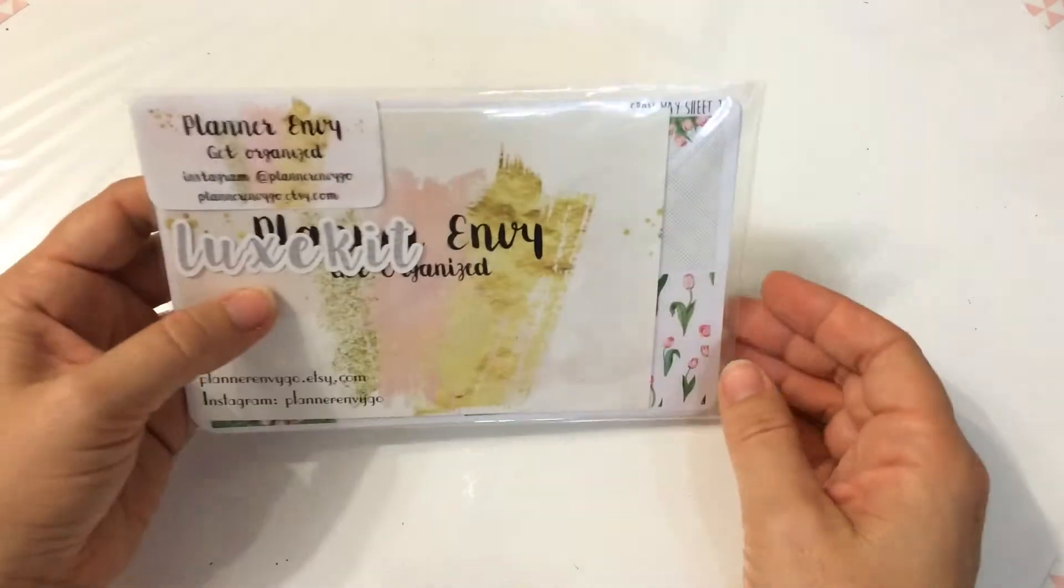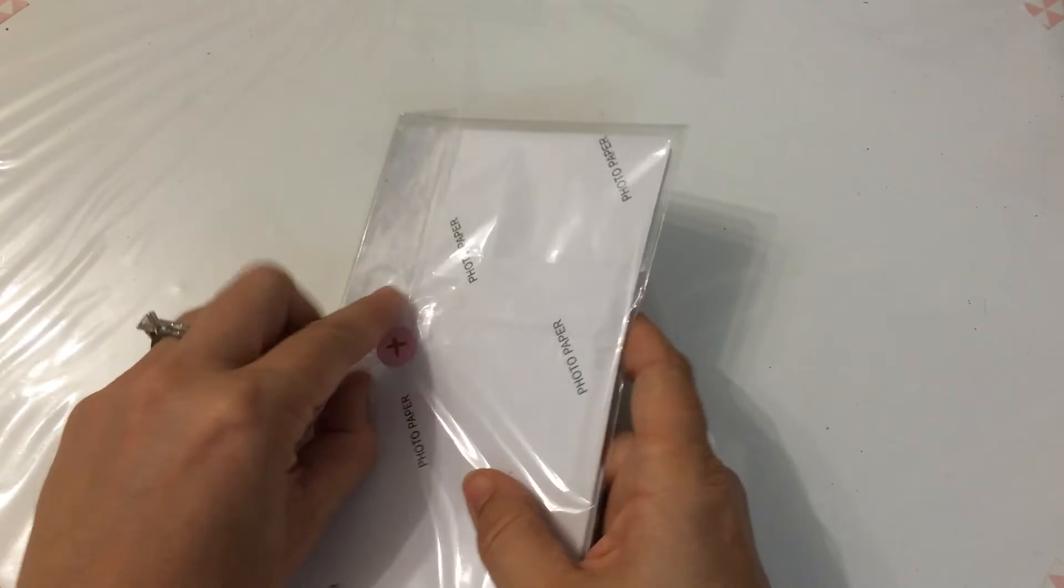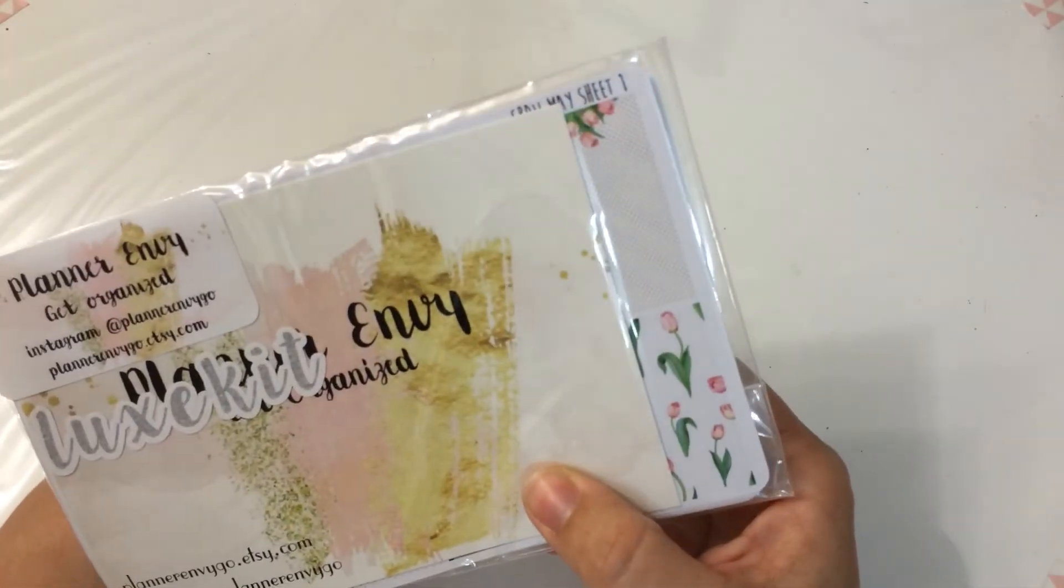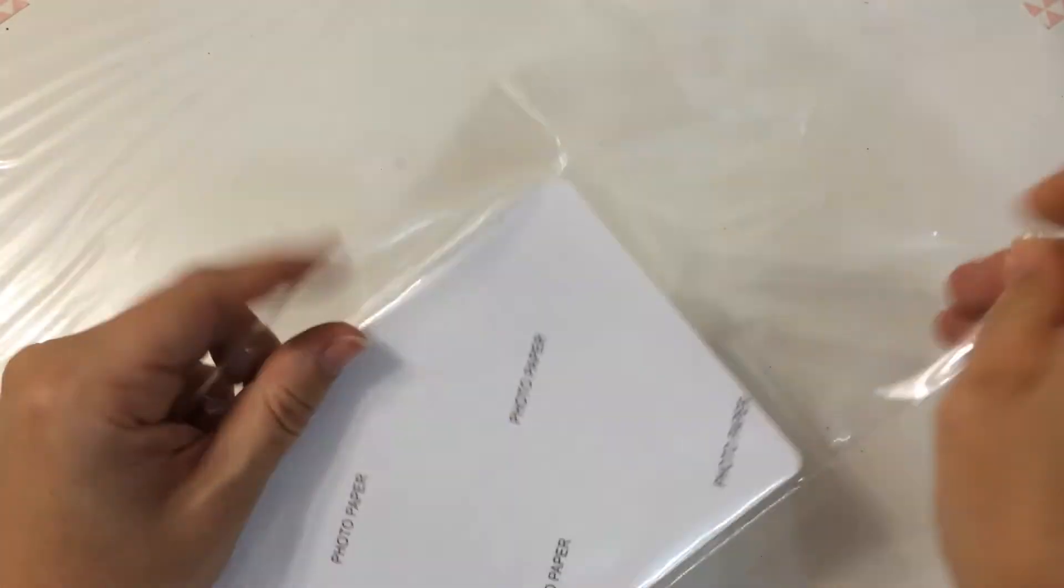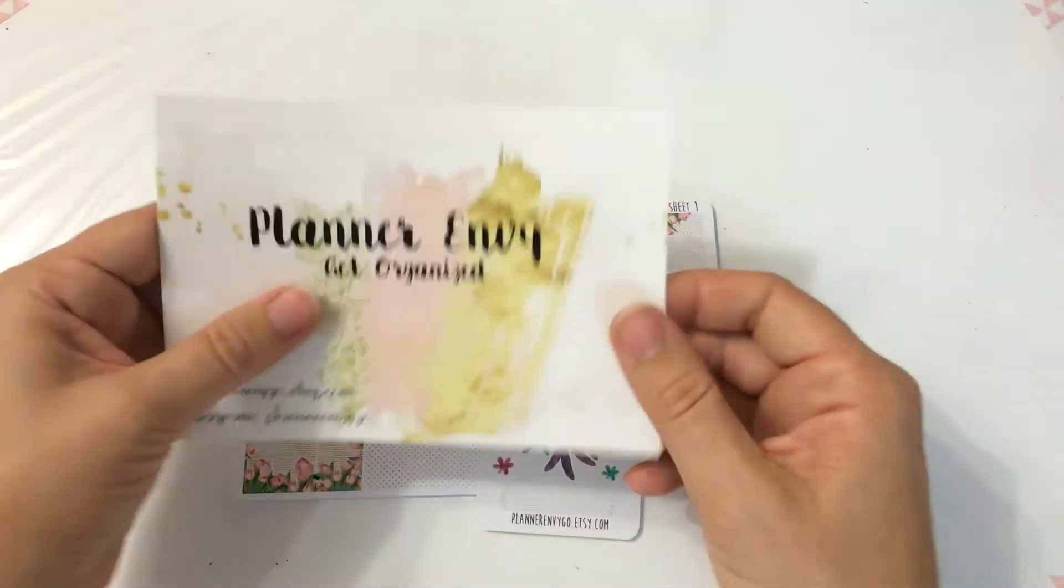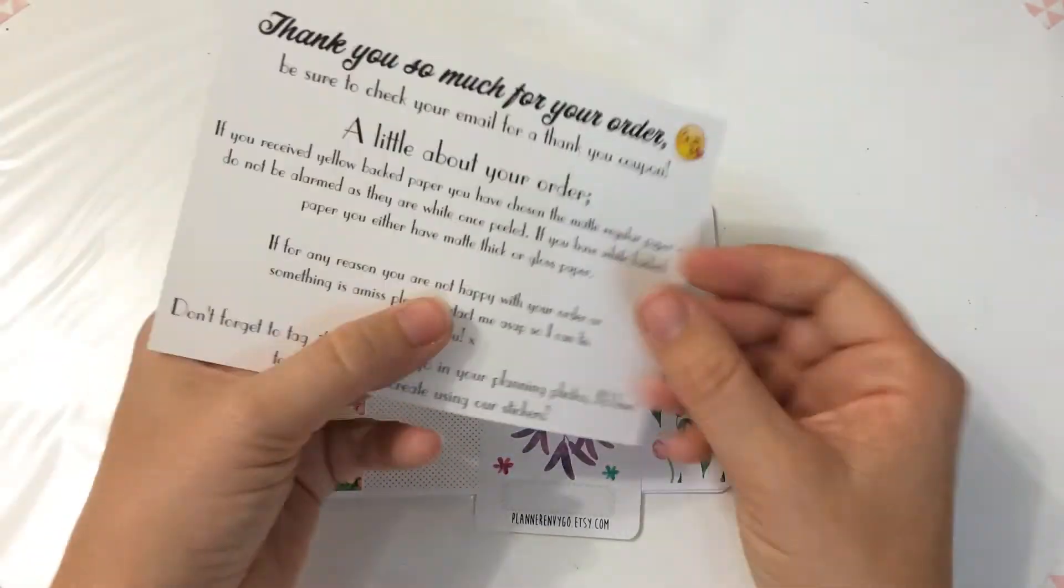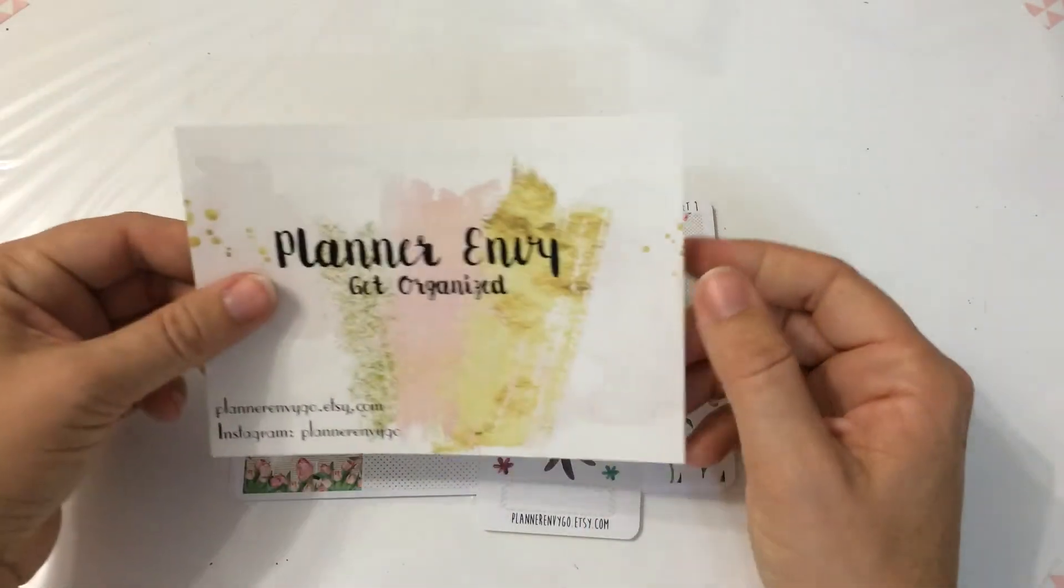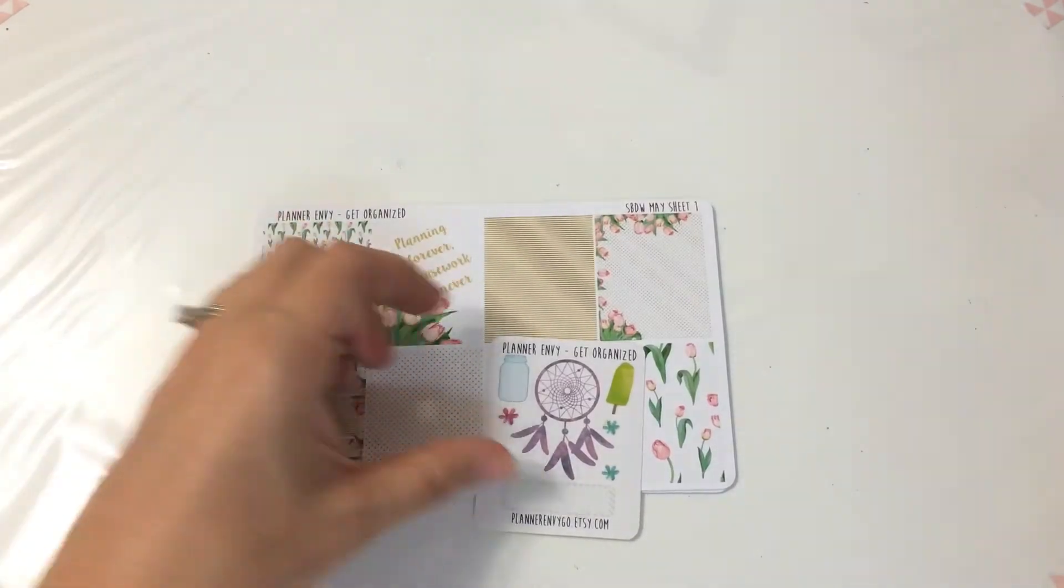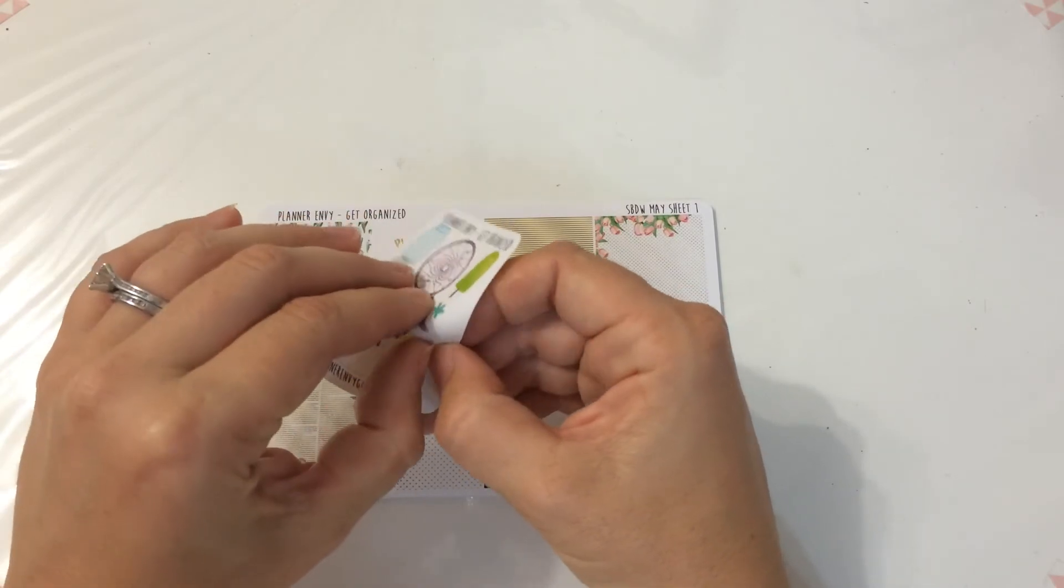And my last sticker pack is from Planet Envy Get Organized or Planet Envy Go. This is the same but different week pack for next month. Her packages always come with this like business card, postcard size, sampler. I've ordered from her a handful of times now. I love her stickers. I love that you can pick normal matte stickers, like thin, thick matte, which is what all of my orders have been.